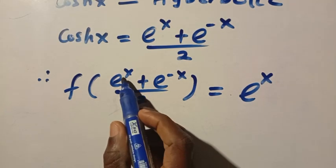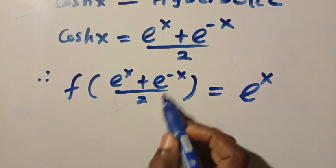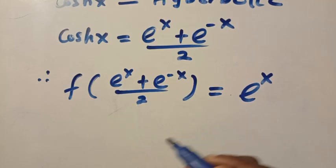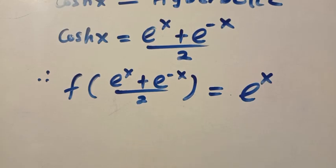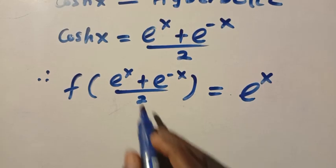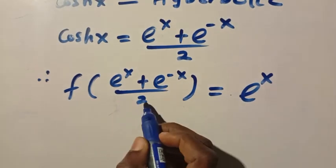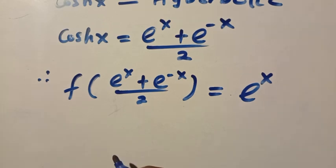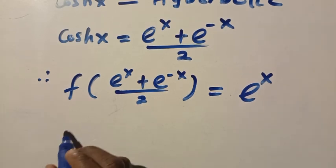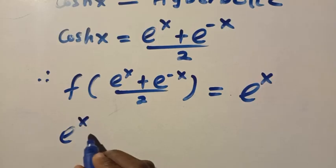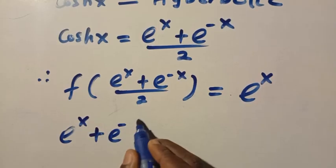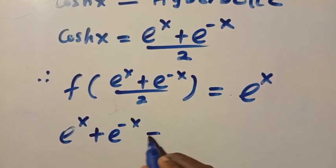We need only x, but here we have e to the power x and e to the power minus x divided by two. How can we reduce this to f of x? We are going to apply the substitution method. We let e to the power x plus e to the power minus x equal to 2t.